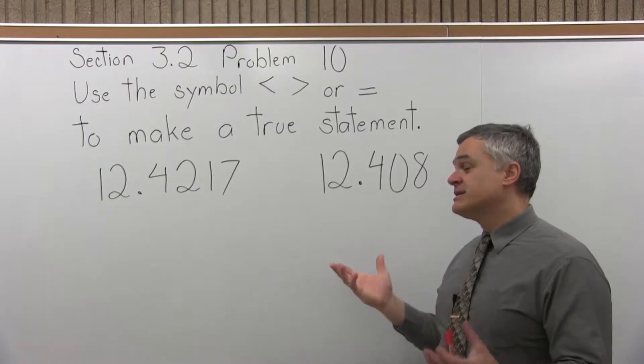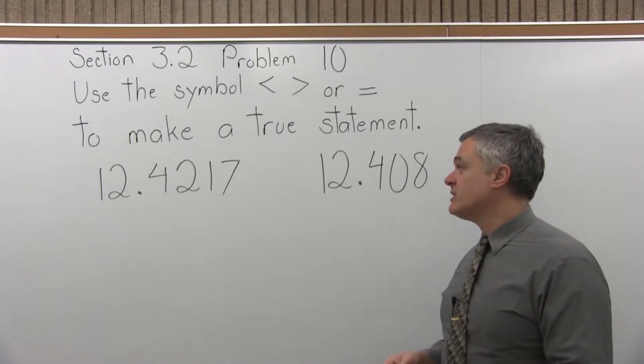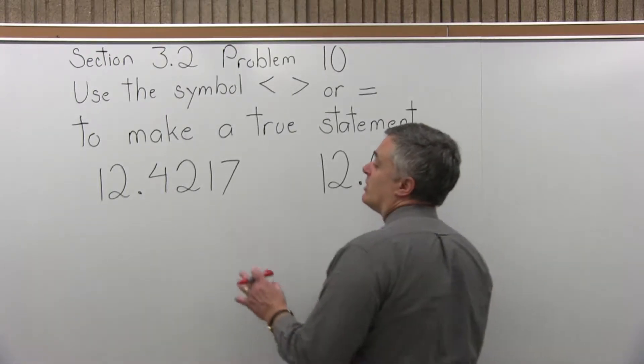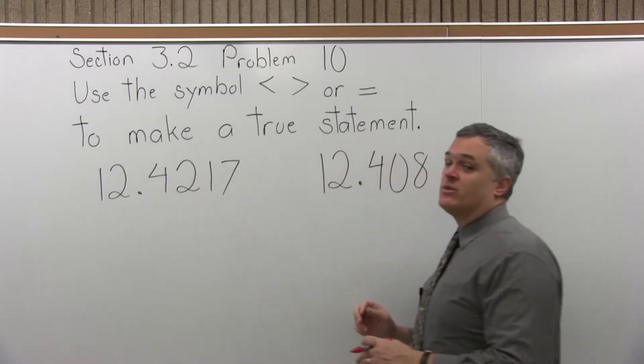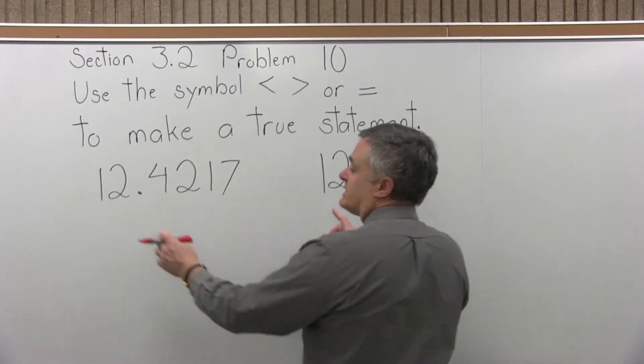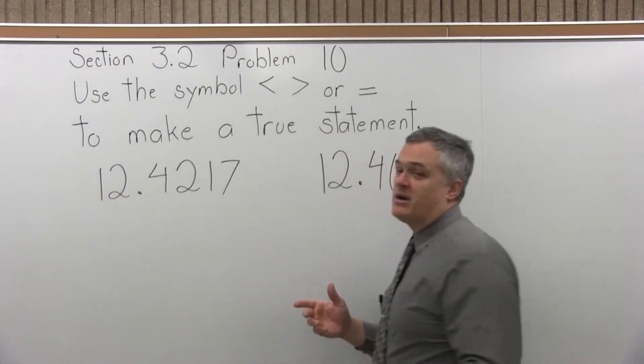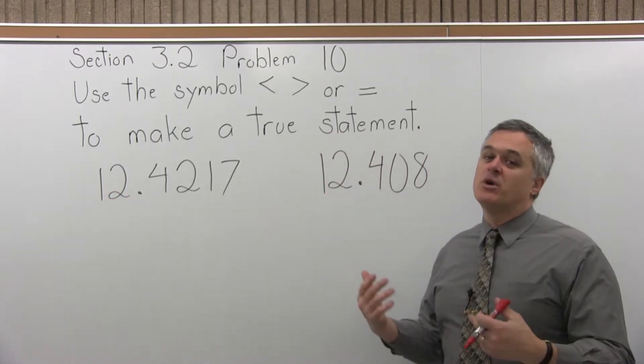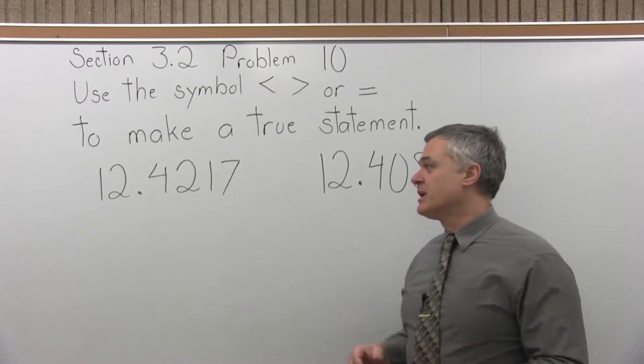Now, they're obviously kind of similar. They look close. It's both 12 point something. One has more digits. With decimals, that's never a determination one way or the other. What you want to do is start with the leftmost digit, make a comparison. If they match, just keep going one digit to the right until you find one that's bigger.